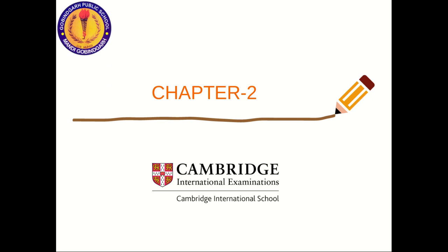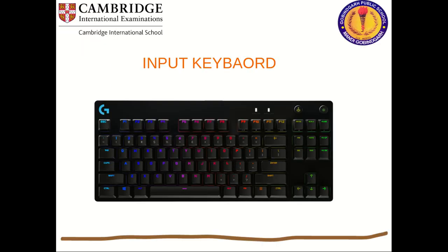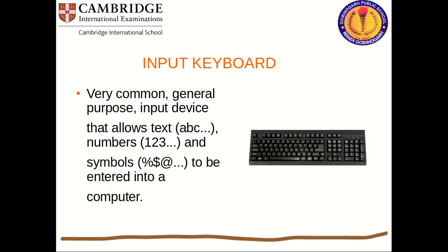The output devices are through which the user gets output from a computer, like a monitor, printer, and speakers. Now let us start with input devices. The keyboard is a very common, general-purpose input device that allows text (ABC), numbers (123), and symbols like percent sign, dollar, at-the-rate, and many more to be entered into a computer.